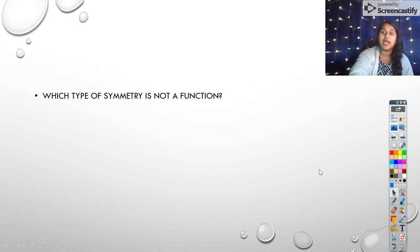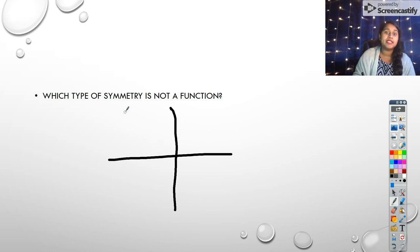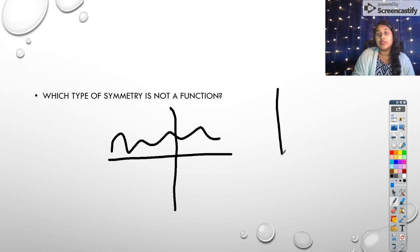Okay, and what kind of symmetry is not a function? Well, if we think about that graphically, any function that has symmetry over the y-axis, any graph that has symmetry over the y-axis, well, is that going to pass the vertical line test? More than likely, it's going to pass the vertical line test. What about with the origin?